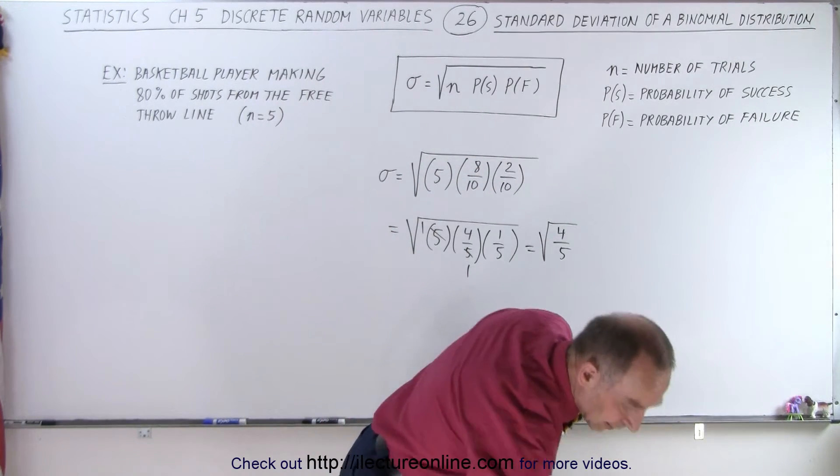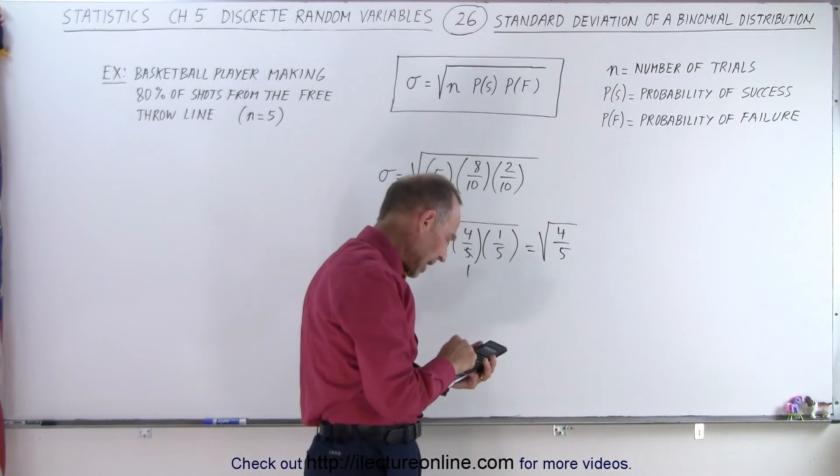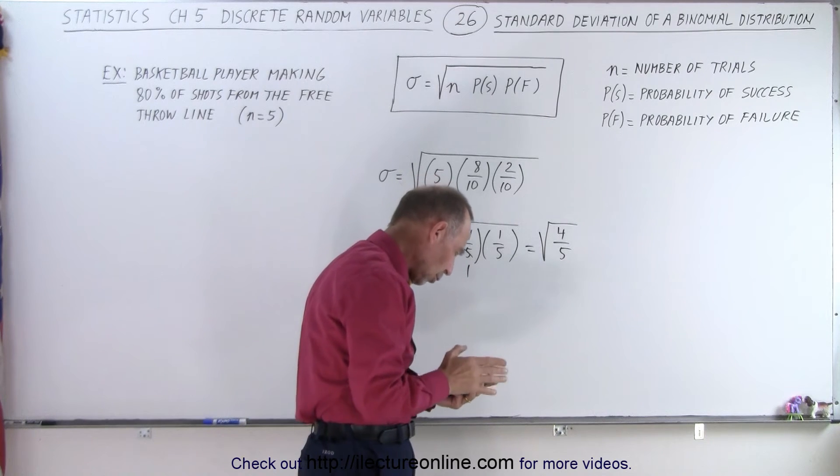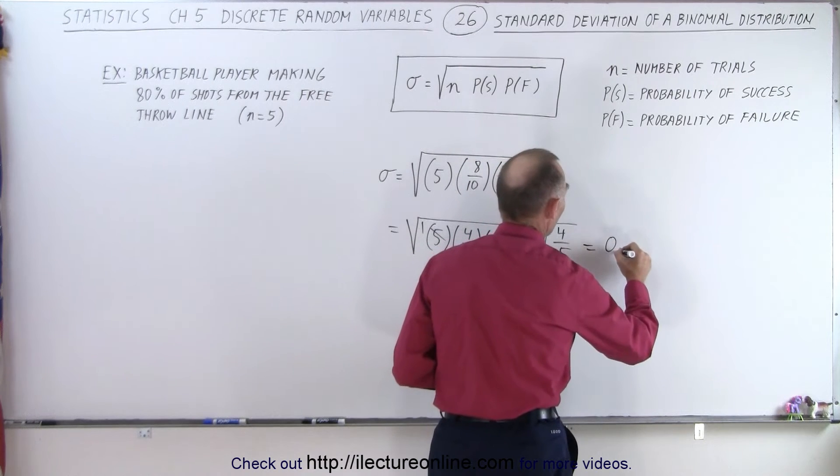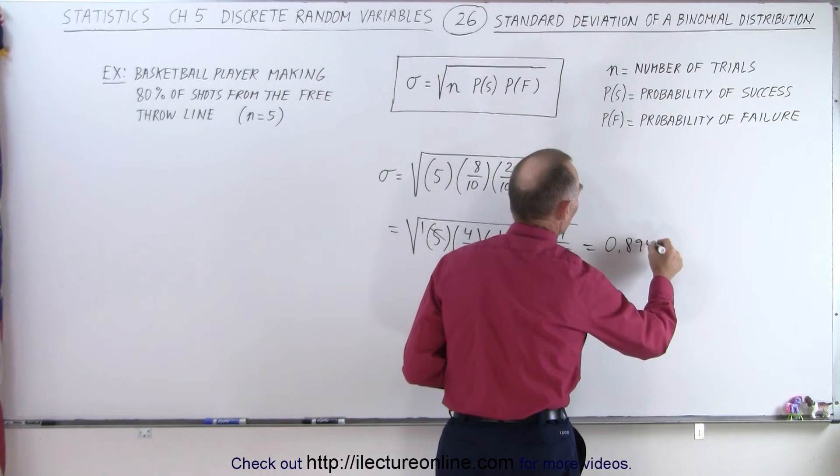Alright, that would be point eight, take the square root of that which is point eight nine four four. So this is equal to zero point eight nine four four.